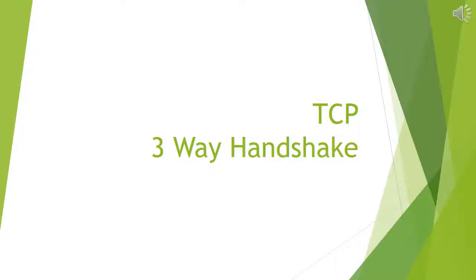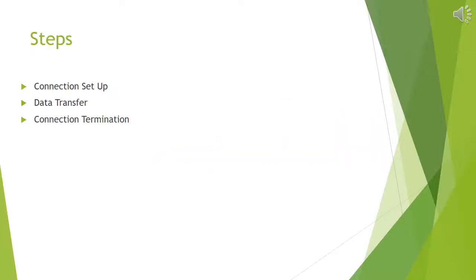Hello everyone, today's topic is TCP three-way handshake. In the last video we have seen the header format for TCP and we will be using those fields here. Basically, the three-way handshake is done in three steps: first is connection setup, second is data transfer, and third is connection termination.